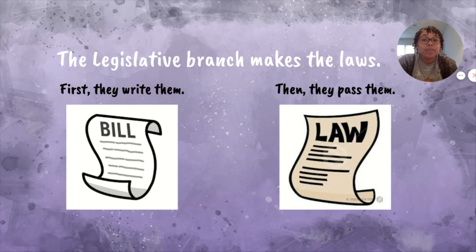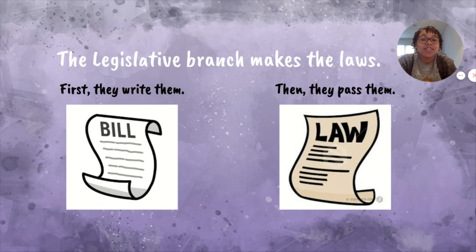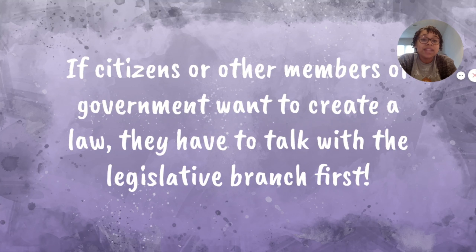The legislative branch makes the laws. One of our essential questions today is: what does the legislative branch do? We know that they make the laws. First, they write them, and when they first write them it's called a bill. And then when they pass them, it officially becomes a law. So you can think of bills as baby laws — they're not ready yet, but when the legislative branch passes them, they become full-grown laws. If citizens or other members of government want to create a law, they have to talk with the legislative branch first. They can't do it without them.